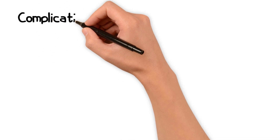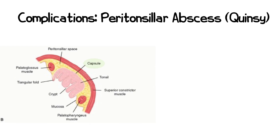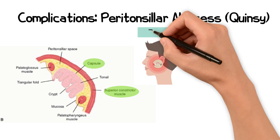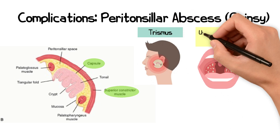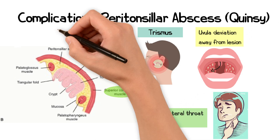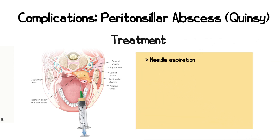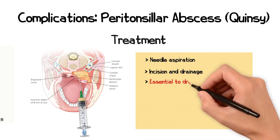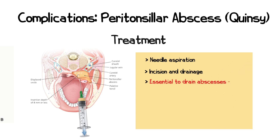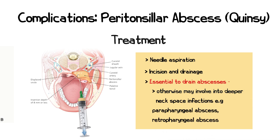In severe cases of bacterial tonsillitis, this may result in a peritonsillar phlegmon evolving into a quinsy — a collection of pus between the tonsillar capsule and the lateral pharyngeal wall. This causes trismus due to medial pterygoid muscle irritation, uvular deviation away from the affected side, and unilateral throat pain. Treatment involves either needle aspiration or incision and drainage to evacuate the pus. It is essential to drain these abscesses, as they may otherwise evolve into deeper neck space collections such as parapharyngeal or retropharyngeal abscesses.